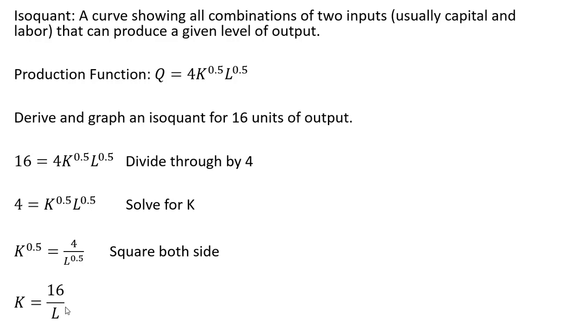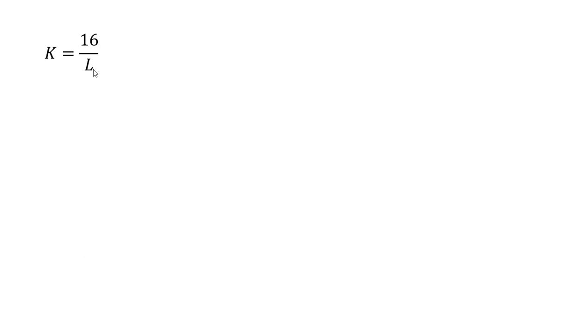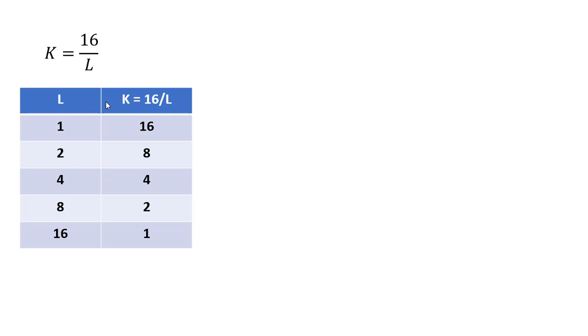That is going to be our equation for an isoquant where we are producing 16 units of output. Here's our equation: K = 16/L. Now let's get several combinations of K and L that, when put back into our production function, produce 16 units of output.